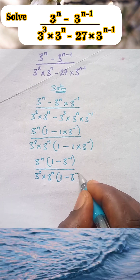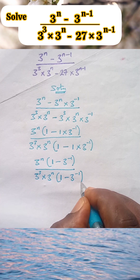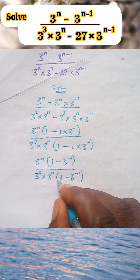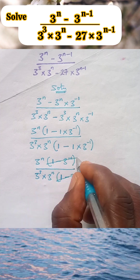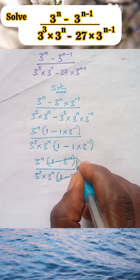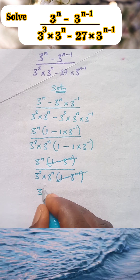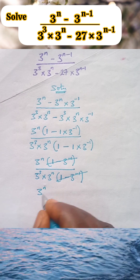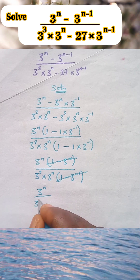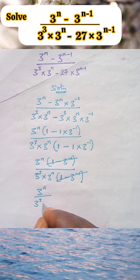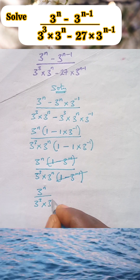This is the same thing as 3 raised to the power minus 1. So at this stage we can strike out these two — this bracket divided by this bracket cancels. We have left 3 raised to the power n, all over 3 raised to the power 3 times 3 raised to the power n.